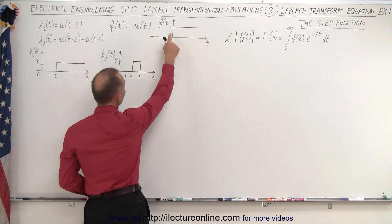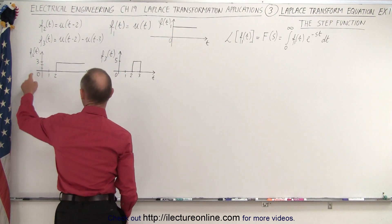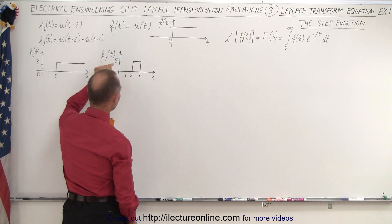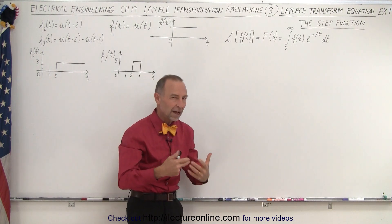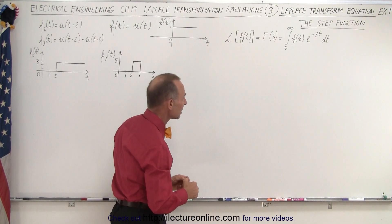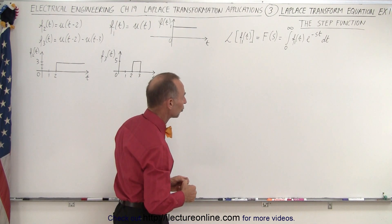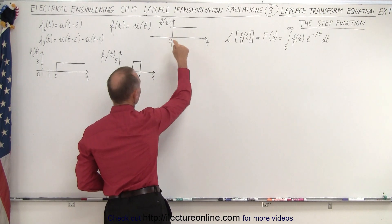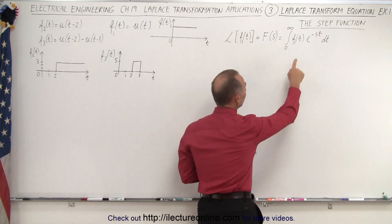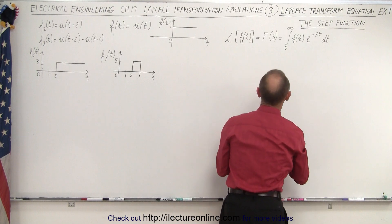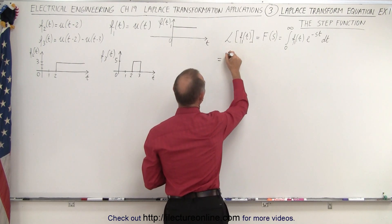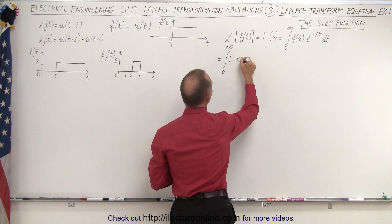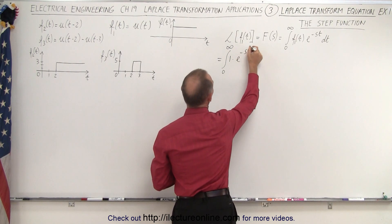Our first step function has an amplitude of one, our next step function has an amplitude of three, and this pulse has an amplitude of five, so you can see how that works in the solution. At time equals zero, the step function has a value of one, so this gets replaced by one, and this is equal to the integral from zero to infinity of one times e to the minus st dt.